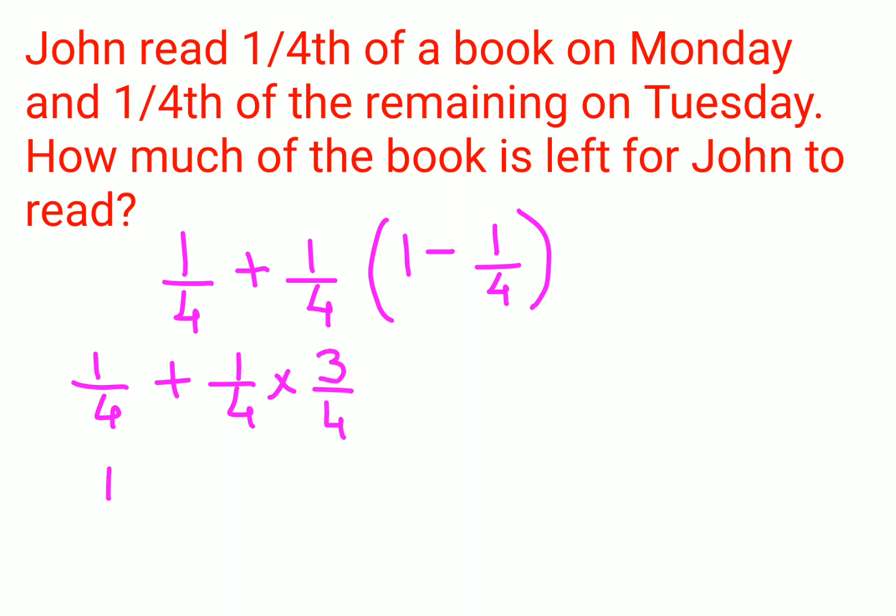So we have 1 upon 4 plus 3 upon 16. So then when you take the LCM, the LCM will come out to be 16. In order to make this 4 as 16, we need to multiply the denominator and the numerator by 4. So we have 4 into 1, that is 4, plus 3. So this comes out to be 7 upon 16.